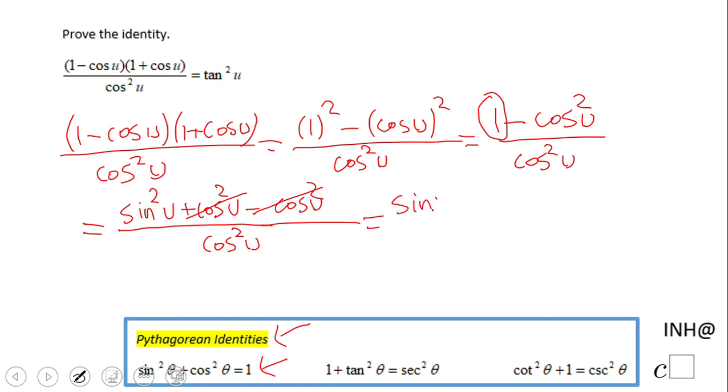sin²u over cos²u. And now if we look into the right-hand side, this is tangent. And sine over cosine is tangent, so we have tangent here, and because you square sine square, cosine square, we have that as well. So you see, we finish at the right-hand side.